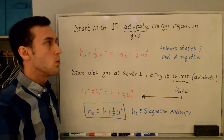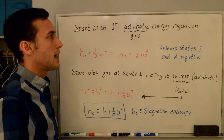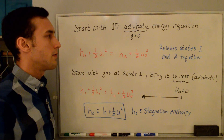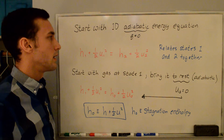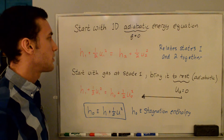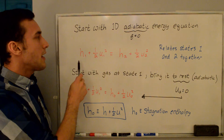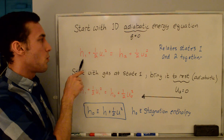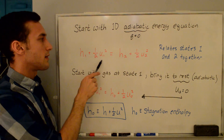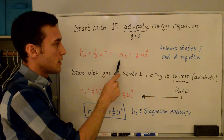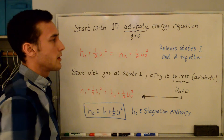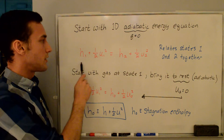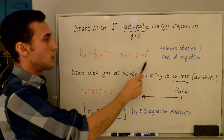We're going to start with the 1D energy equation. It's adiabatic, meaning that Q is equal to zero. I have a video on this that I'll link to in the video description. The result from that video is this equation: the enthalpy at one plus one half times the velocity at one squared equals enthalpy at two plus one half the velocity at two squared. This relates states one and two together.